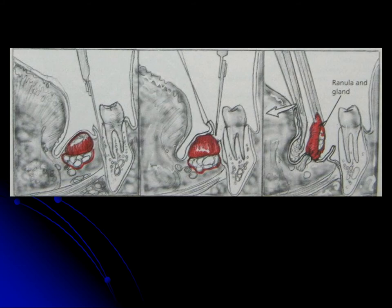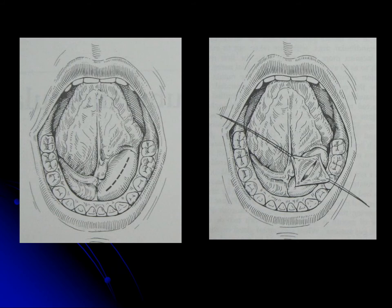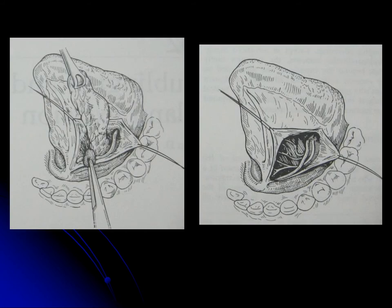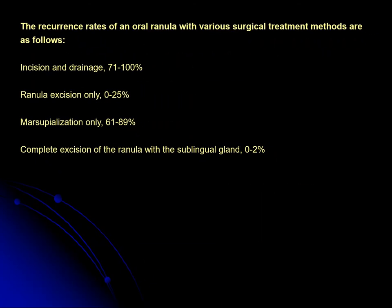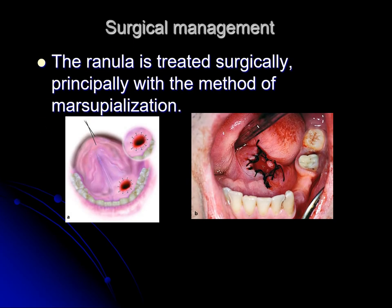Surgical management: intraoral ranula cyst enucleation along with excision of the sublingual gland minimizes recurrence. For plunging ranula, a combined intraoral and cervical approach is used. The recurrence rate for ranula excision alone is around 25%, but marsupialization has a recurrence rate of 60–89%. Therefore, excision is better compared to marsupialization.